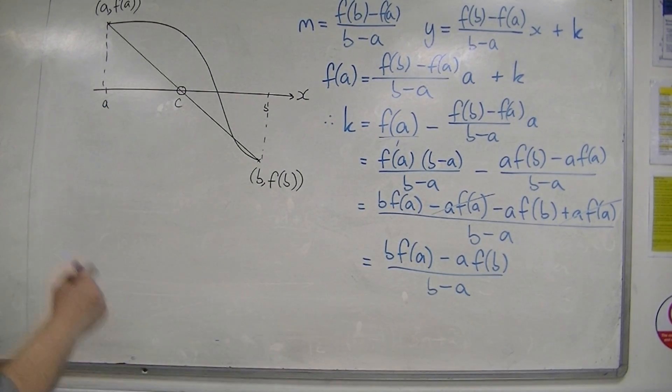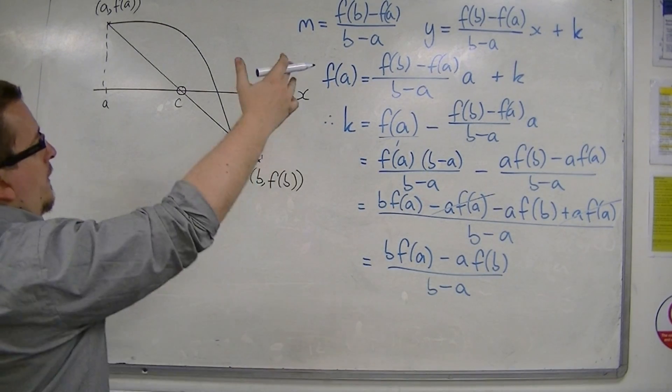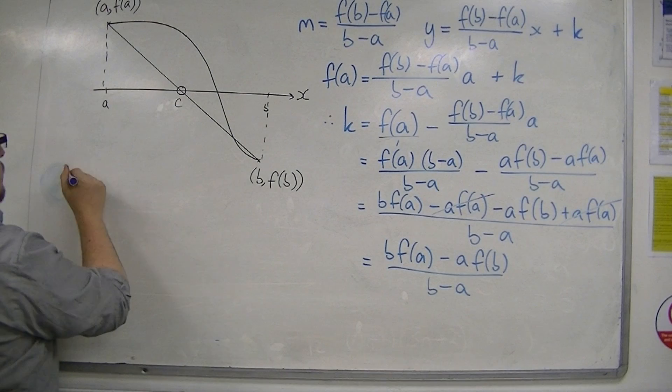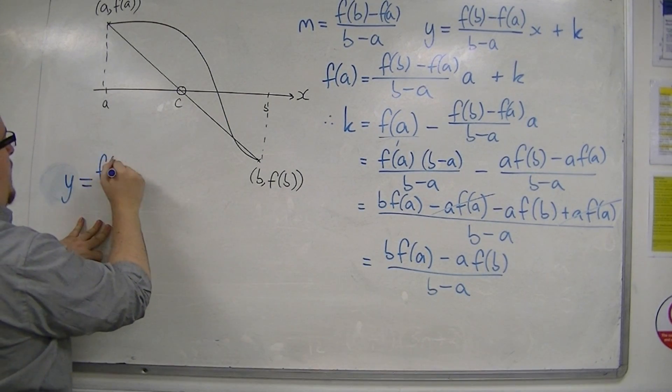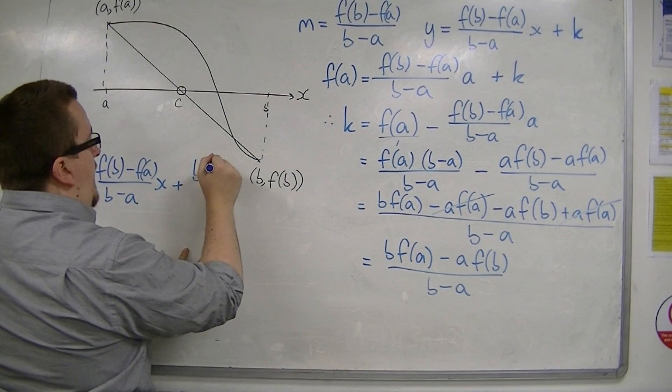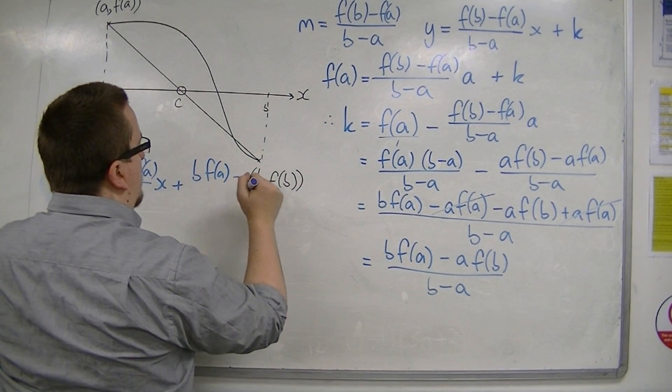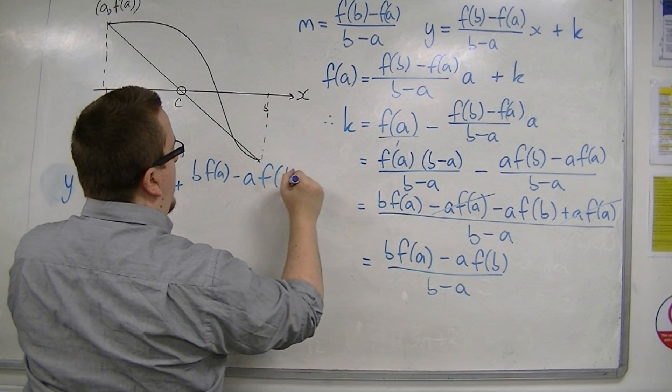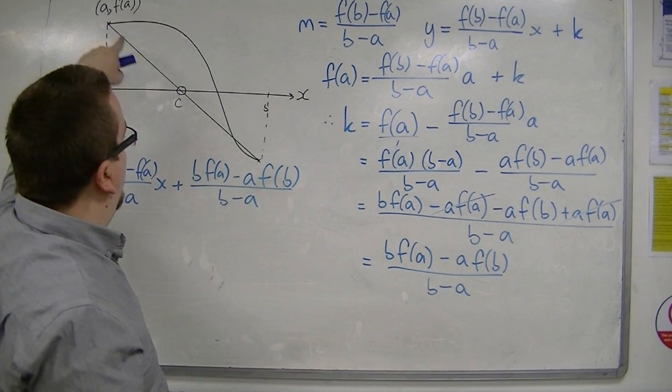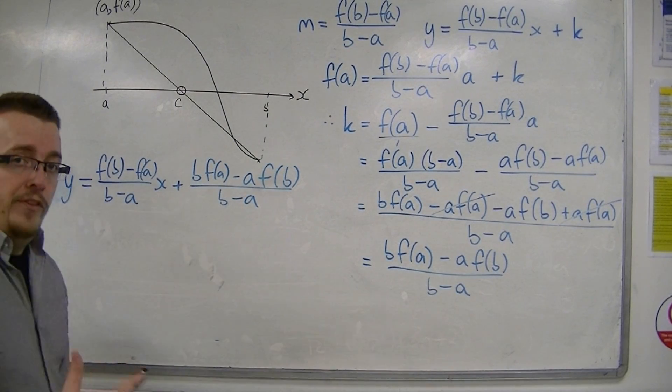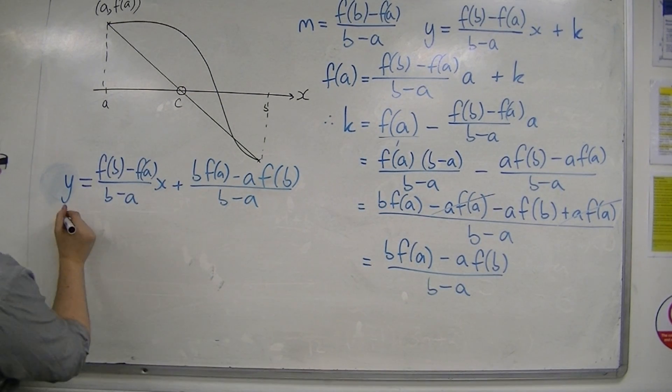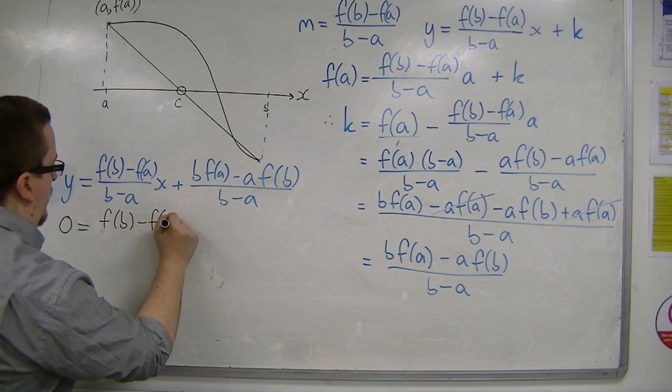So, what I can now say is that I've got y equals [f(b) - f(a)]/(b - a) times x plus [b·f(a) - a·f(b)]/(b - a). So, this is what I've currently got. That's the equation of that line. Now, I want to determine when y is 0, x is c. That will give me the value of c. So, I want to solve this equation for c.